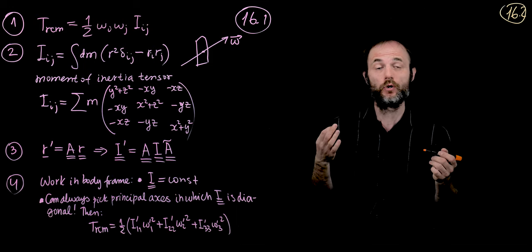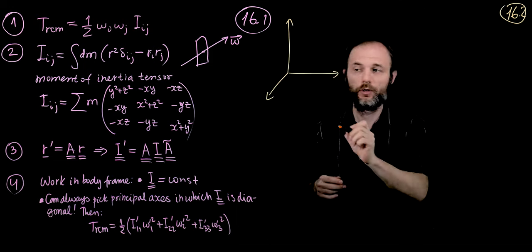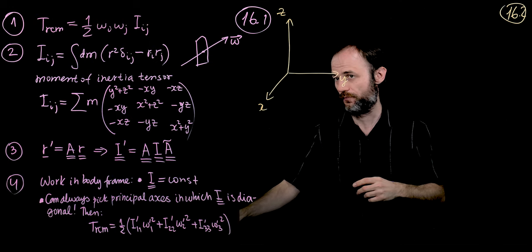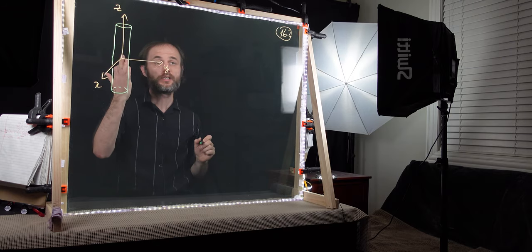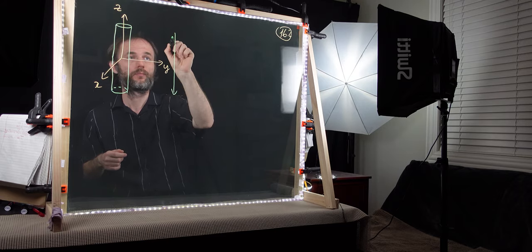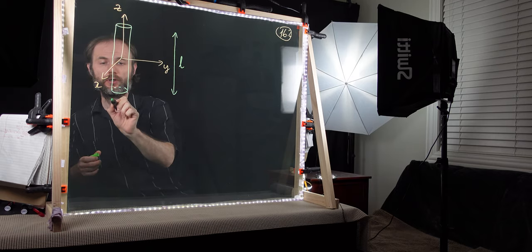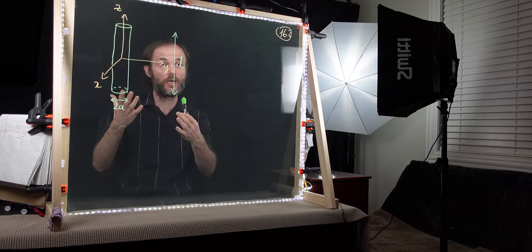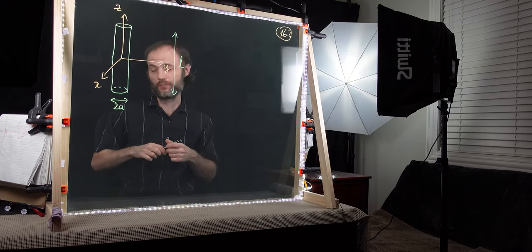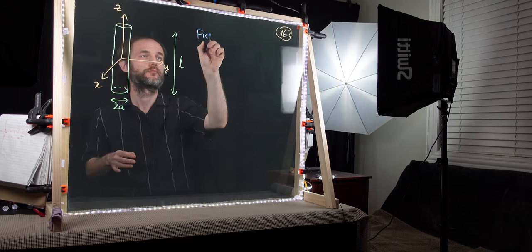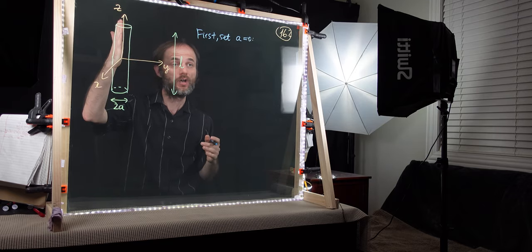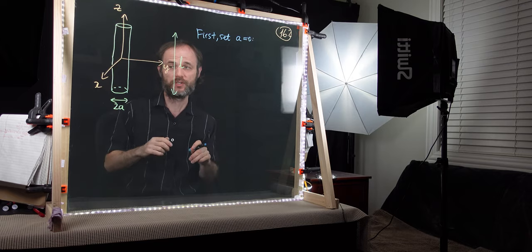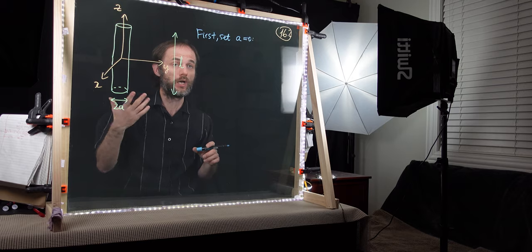The first example we'll consider is that of a rigid rod. We have a coordinate system x, y, and z, and we place a rigid rod along the z-axis. The length of the rod is l, and the radius of the rod is a, so the diameter is 2a. We would like to obtain its moment of inertia tensor. Let's first simplify and consider the case a equals zero — an infinitesimally thin rod, a line mass distribution along the z-axis of length l.